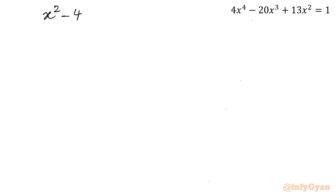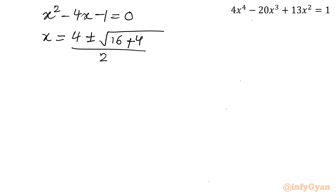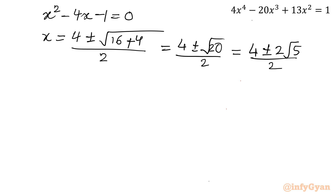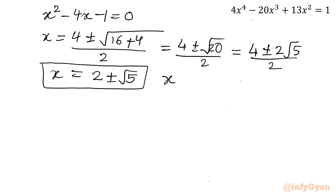Let us solve x² minus 4x minus 1 equals 0 using the quadratic formula: x equals minus b plus or minus root of b² minus 4ac, all over 2a. That gives 4 plus or minus root of 16 plus 4, over 2, which is 4 plus or minus root 20 over 2, or 4 plus or minus 2 root 5 over 2. Dividing by 2: x equals 2 plus or minus root 5. So the 4 real solutions are x equals 2 plus or minus root 5, and x equals 1/2 with multiplicity 2, since it is a repeated root.